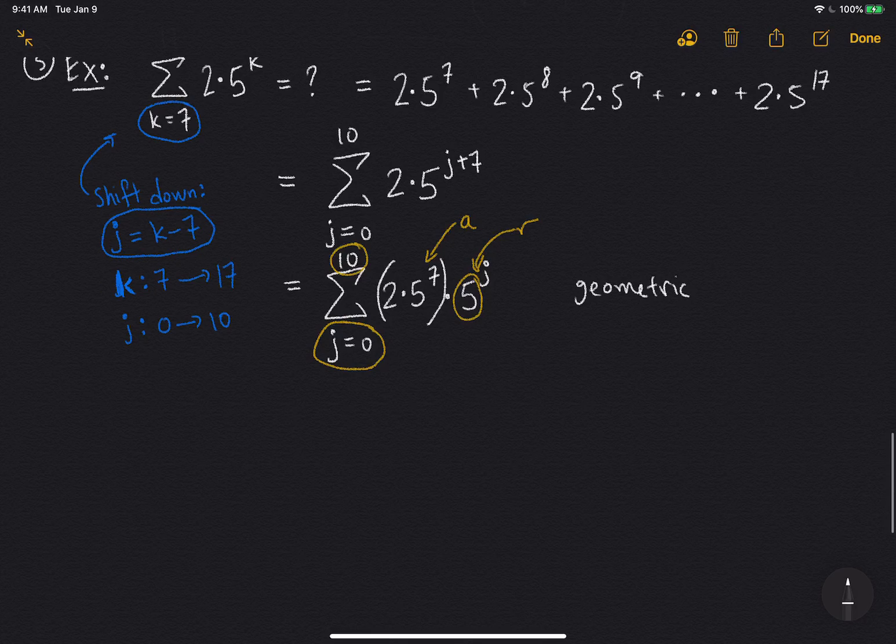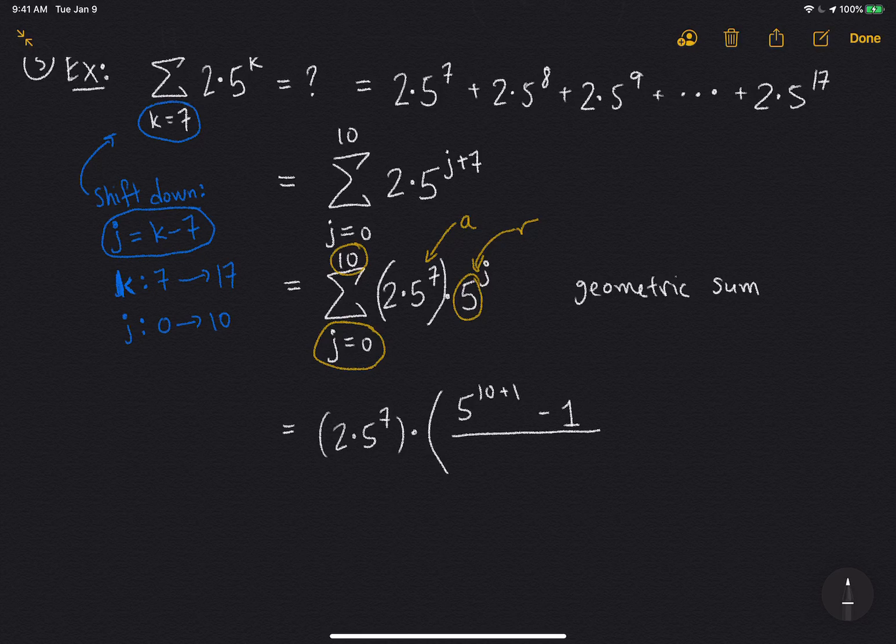So now let's apply the geometric sum formula here. So I take my initial term a, so 2 times 5 to the 7. And then I multiply by the common ratio 5 to the power n plus 1, minus 1. And I divide all that by r minus 1. So in this case, 5 minus 1. Okay, and now you can simplify this if you want. You can plug this into your calculator and you'll get the result of this geometric sum.